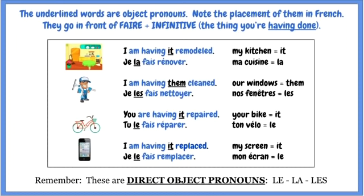Now let's do this with some pronouns. Notice where they are placed in a sentence in French — they're placed in front of faire plus the infinitive. So, if I'm having it — my kitchen, which is feminine — remodeled: je la fais rénover. Or I'm having them — our windows — cleaned: je l'ai fait nettoyer. Or you're having it — your bike — repaired: tu le fais réparer. Or I'm having it — my screen — replaced: je le fais remplacer. These are direct objects, so we're using le, la, and les as the pronouns.